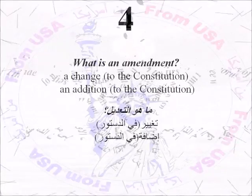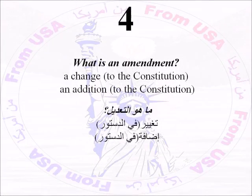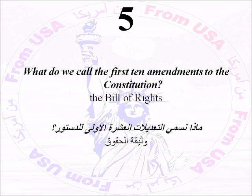Number Four: What is an amendment? An amendment is a change to the Constitution, or an addition to the Constitution. Number Five: What do we call the first ten amendments to the Constitution? The Bill of Rights.